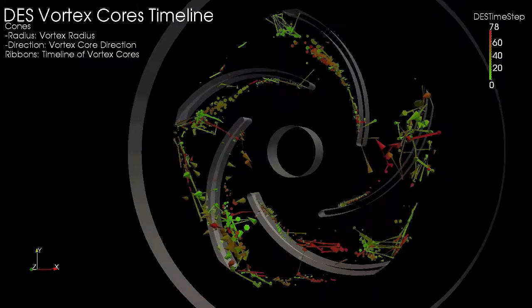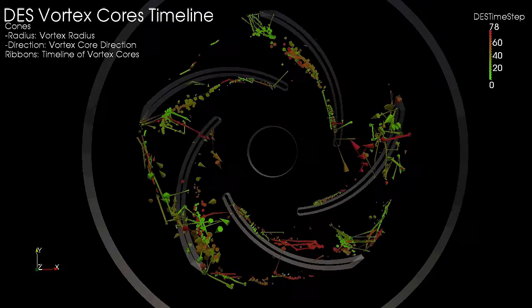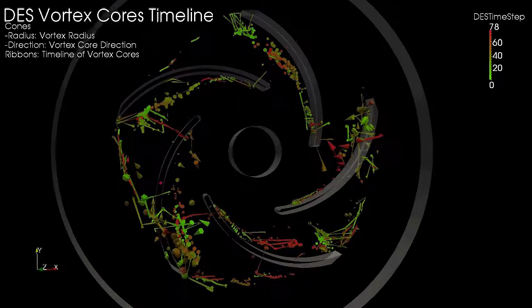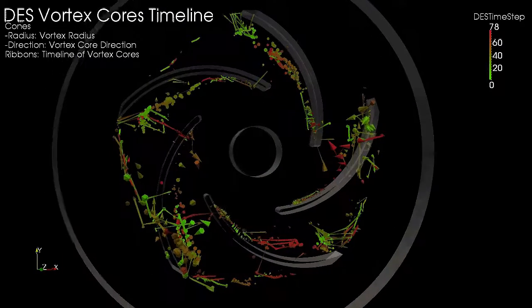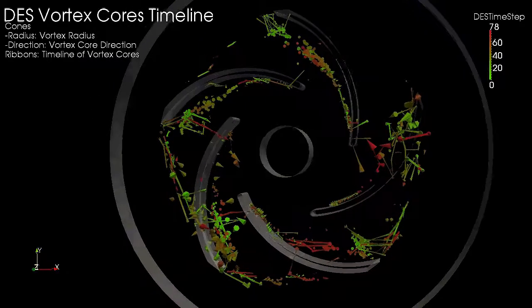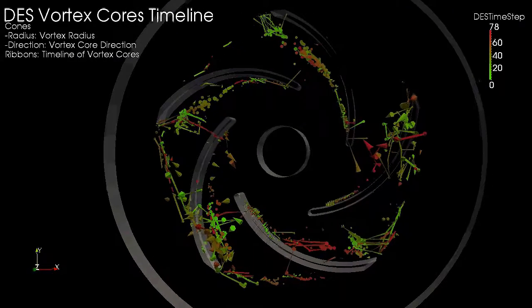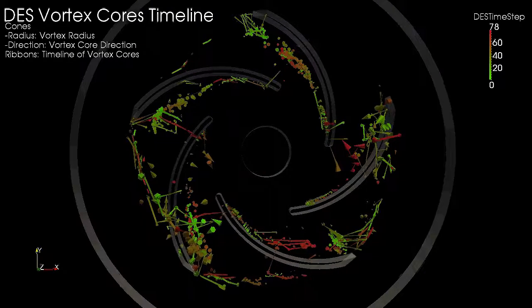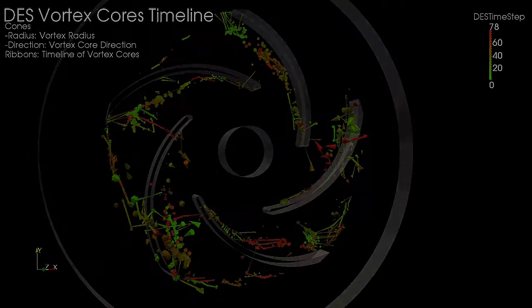Some regions have a lot of cones connected with ribbons, indicating that these vortex cores appear near each other in consecutive time steps. We also see isolated cones that are not connected with ribbons. These are vortices that appear for a single time step and disappear in the next time step.